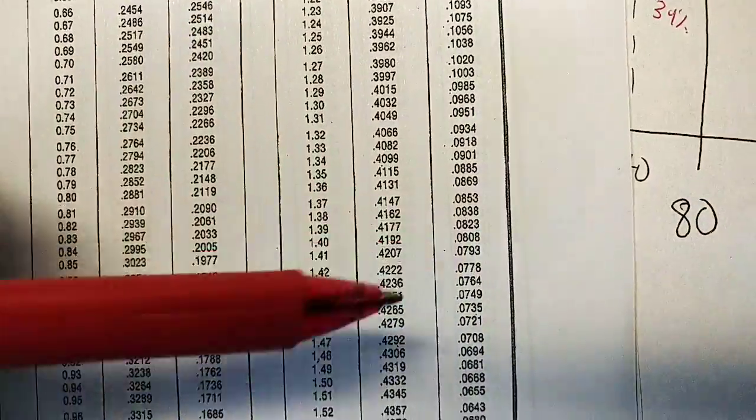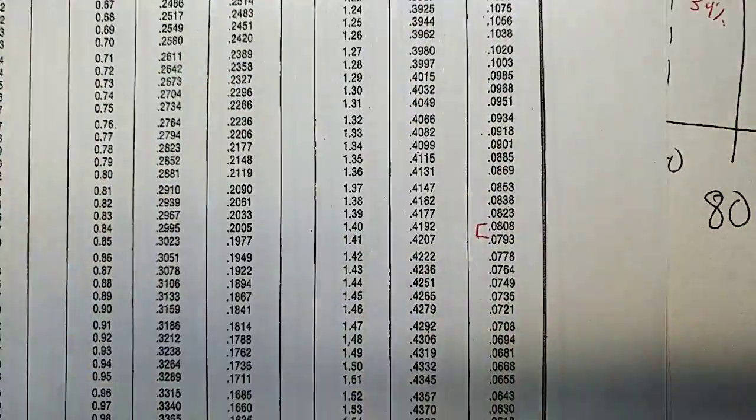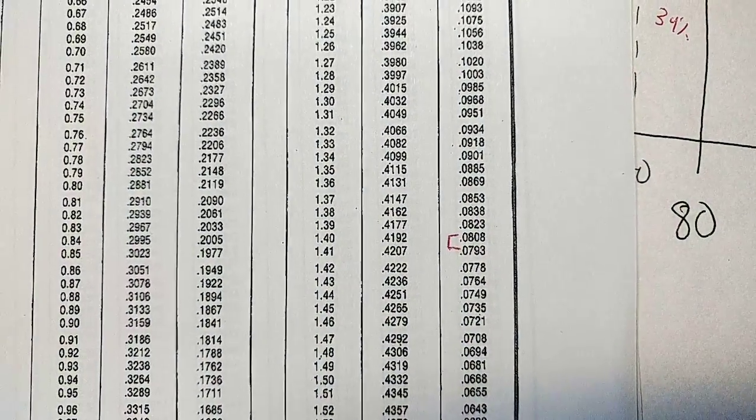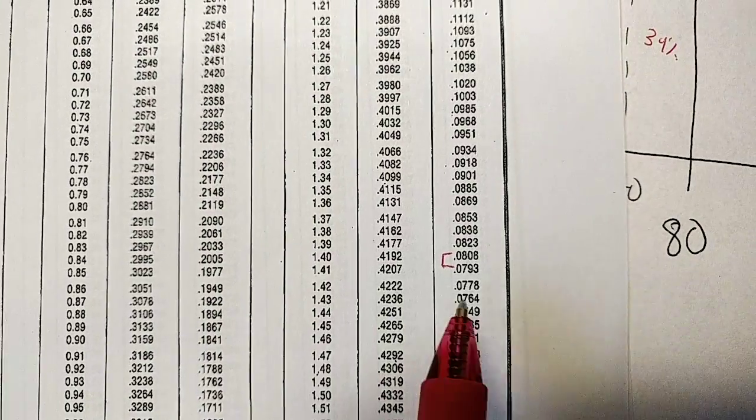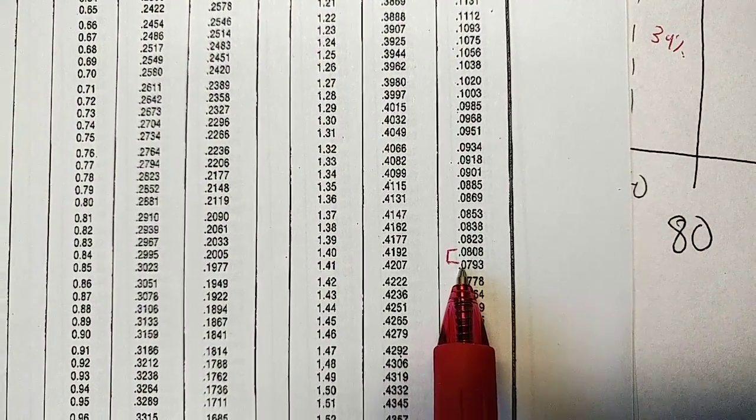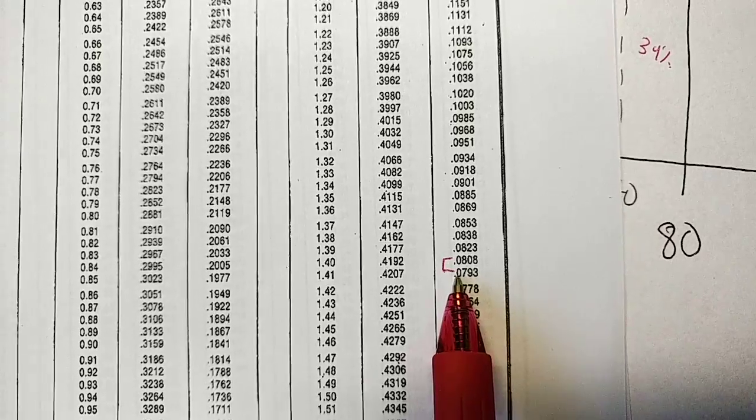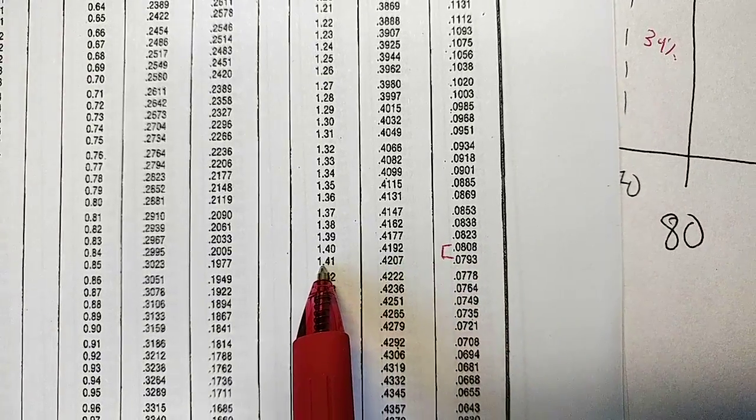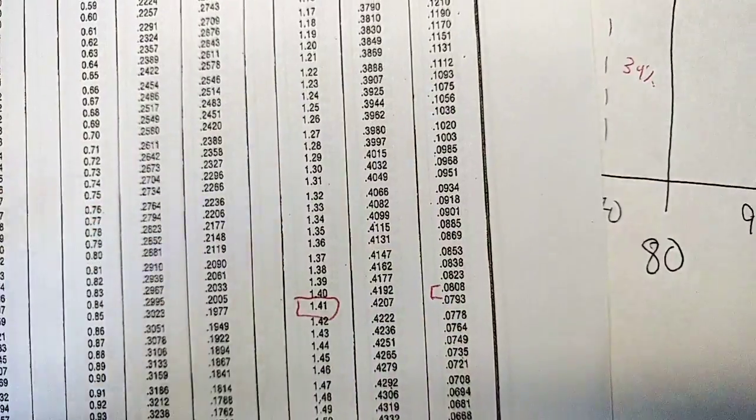As I'm scrolling along, I see that I have two numbers that are close to 0.08. You choose the number that is closest to 0.08, and in this case, it would be the 0.0793. So 0.0793 is pretty darn close to 0.08, so I'm now going to scroll over and see what Z score that's associated with.